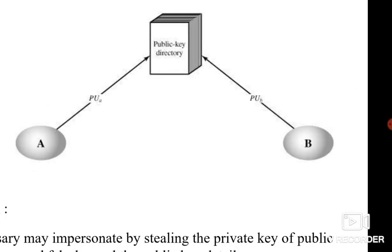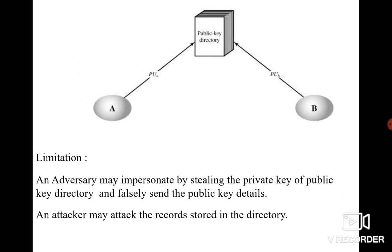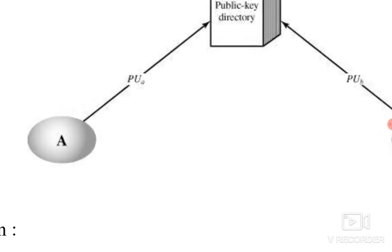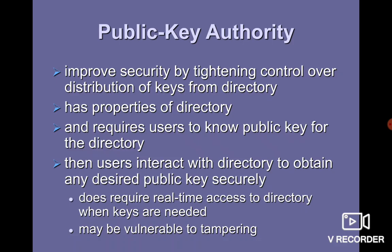Each user registers their public key with the public key authority, and from the public key authority we can get the public key of others. The drawback of this method is that you can impersonate the public key directory — that is, the private key of the public key authority can be stolen, allowing someone to obtain certificates of all others. To overcome this, we go for the third method: public key authority.